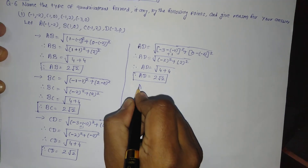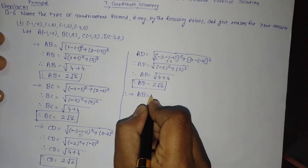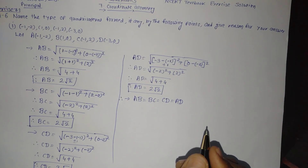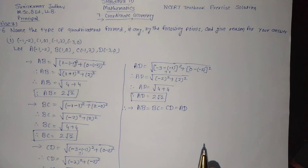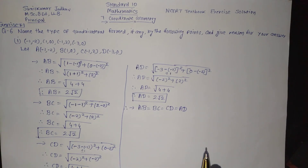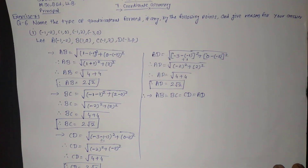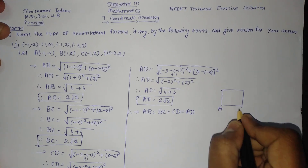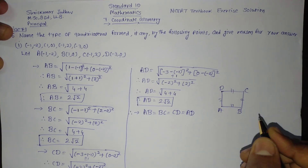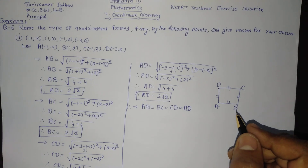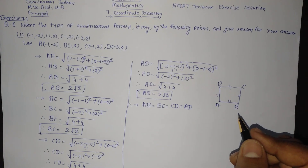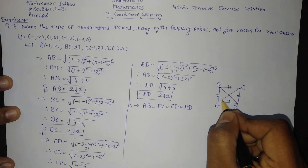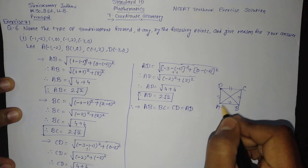So we can see that AB = BC = CD = AD = 2√2. Therefore all the sides of this quadrilateral are of the same measure. Now if we want to find out whether it is a square or not, we need to check the diagonals. If the diagonals are also of equal measure, it will confirm it is a square. So we will find the diagonals AC and BD.